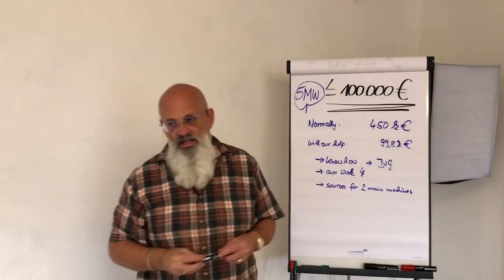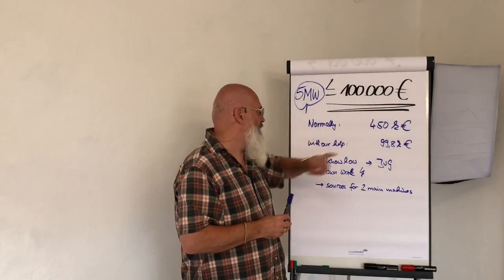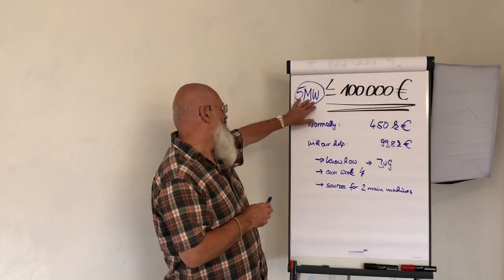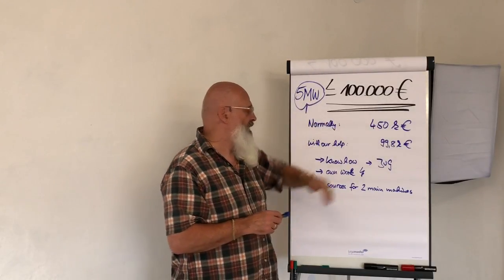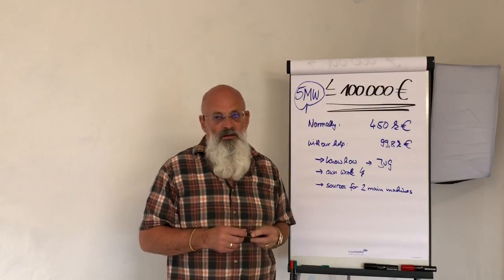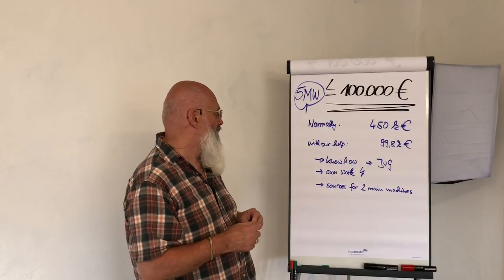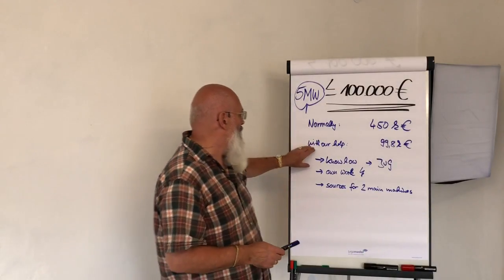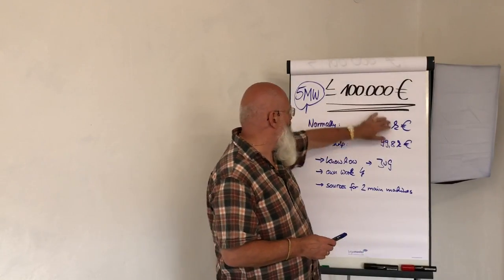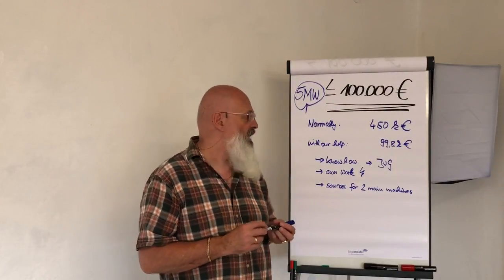Because normally you pay at least 450,000 Euro for the running production. Maybe then it's a little bit more than 5 MW but below 450,000 Euro it's in our experience not possible to make the running production. With the help of JVG, with our help, you can do this invest, this running factory for 99,800 Euro.